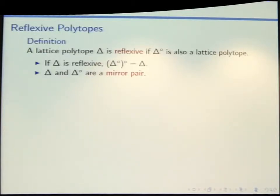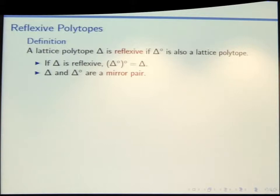You can start with a polytope and write down the equations for the facets — the hyperplanes that bound your polytope. You can normalize to have the right-hand side of your facet equation be negative 1, read off a new point, and check whether that new polytope is a lattice polytope. If so, you say that your pair of lattice polytopes are reflexive and that they make up a mirror pair.